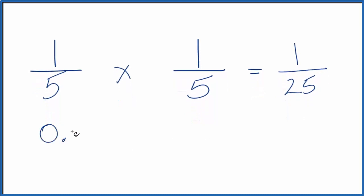One divided by five, that's 0.2. So 0.2 times 0.2, that equals 0.04.